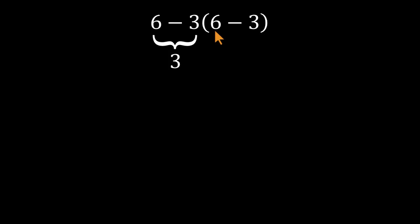Then they look at the parentheses. Six minus three equals three again. Now they multiply. Three times three equals nine. It looks neat. It feels finished, but it's wrong.